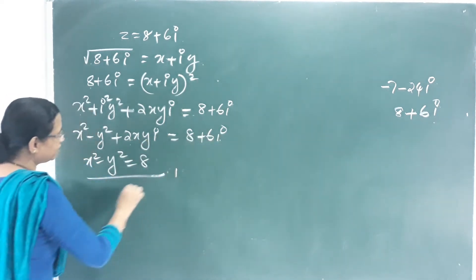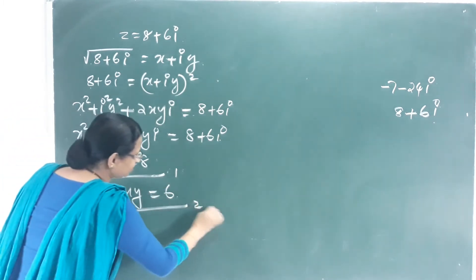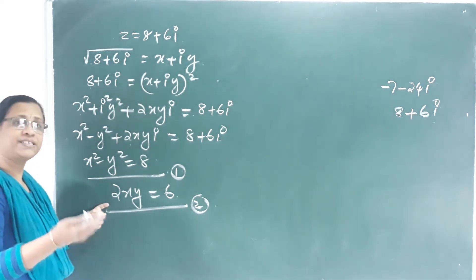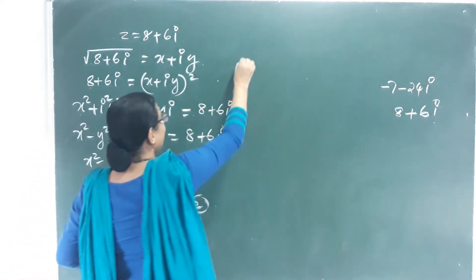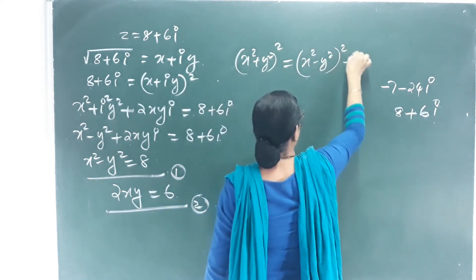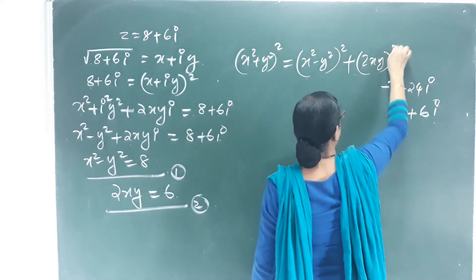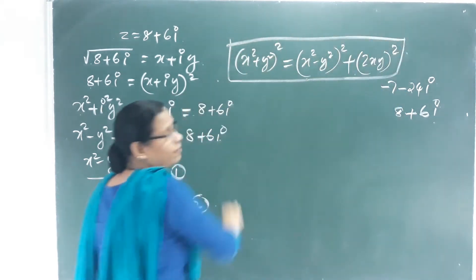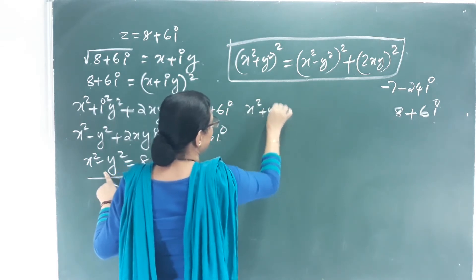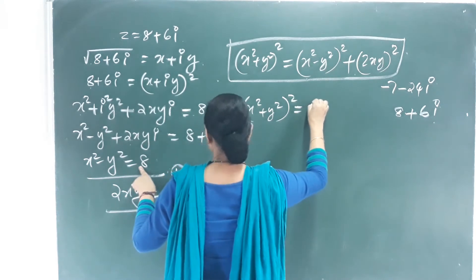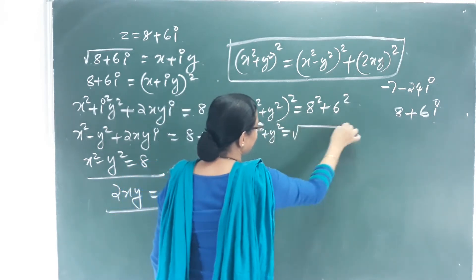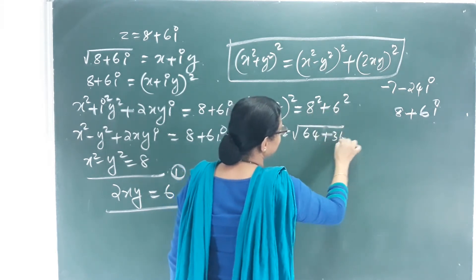Equation 2: 2xy = 6. Now we use the identity: (x² + y²)² = (x² − y²)² + (2xy)². Substituting: (x² + y²)² = 8² + 6² = 64 + 36 = 100. Therefore x² + y² = √100 = 10.